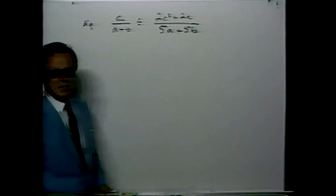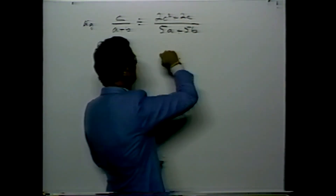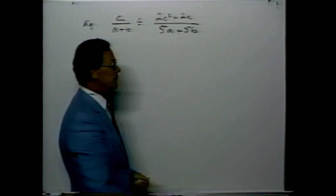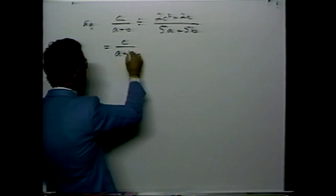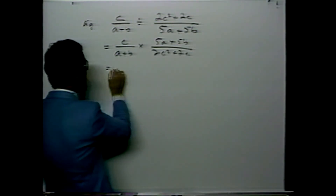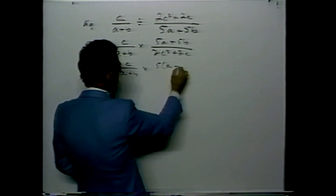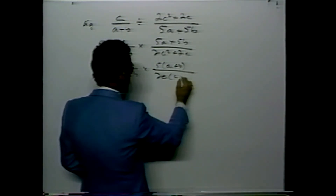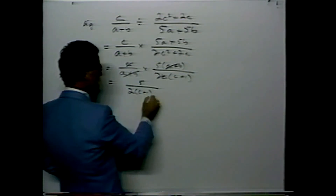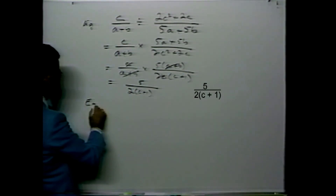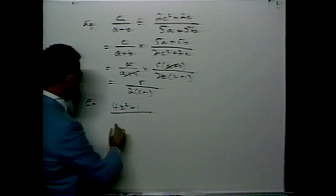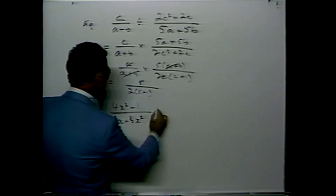For example, each of the questions solved earlier could have started as a division question, such as C over A plus B divided by 2C squared plus 2C over 5A plus 5B. That is the same question done earlier, but now written with a division symbol. We simply rewrite it as A plus B times 5A plus 5B over 2C squared plus 2C, and continue as before.